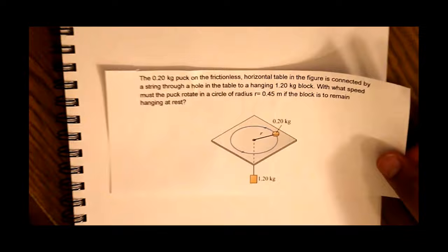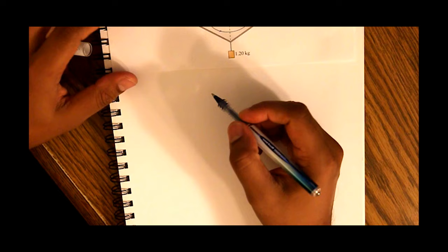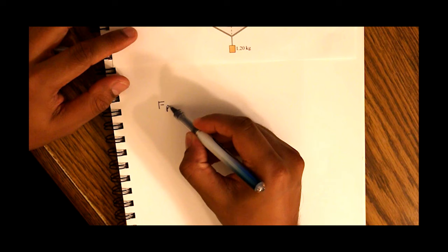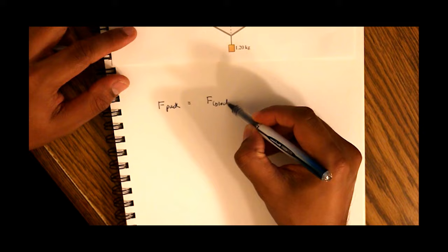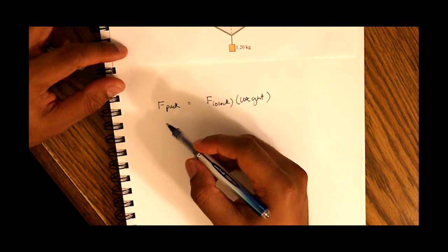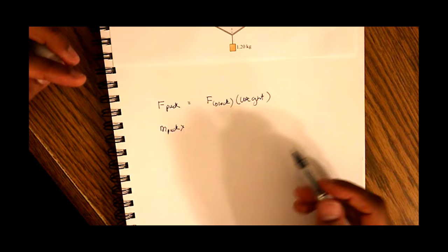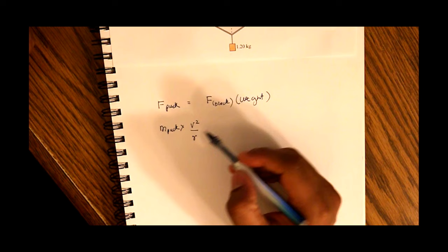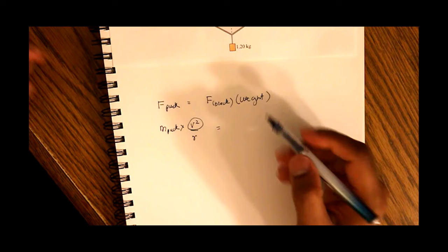So the force of the puck should be equal to the force of gravity on the block, which is nothing but the weight of the block. So force is the mass of the puck times the centripetal acceleration, that's v squared over r. We're asked to find out v and we can set that equal to the weight of the block, so that's mass of the block times its acceleration due to gravity which is constant 9.8.